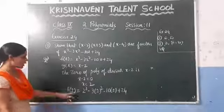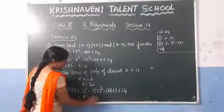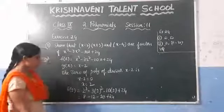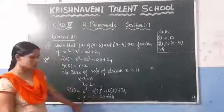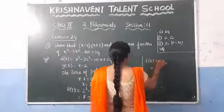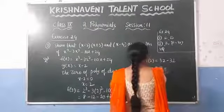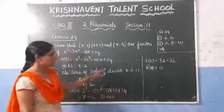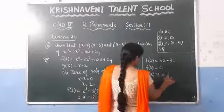2 cubed is 8, and 3 times 4 is 12, and 10 times 2 is 20. Adding positives: 8 plus 24 equals 32. Subtracting: 32 minus 12 minus 20 equals 32 minus 32 equals 0. So f of 2 equals 0. Since the remainder is 0, we can say that g of x, which is x minus 2, is a factor of f of x.